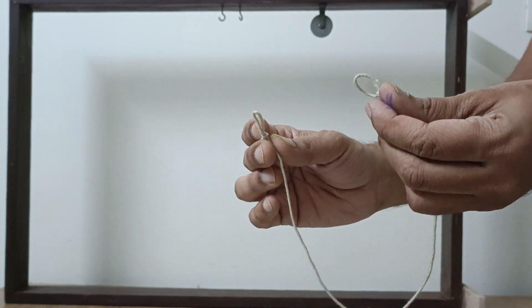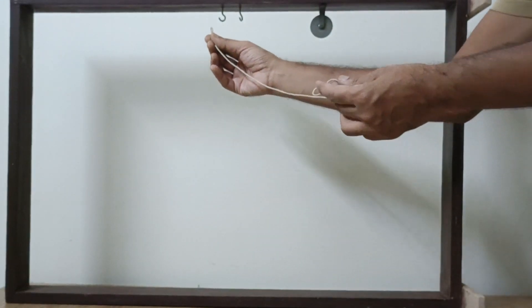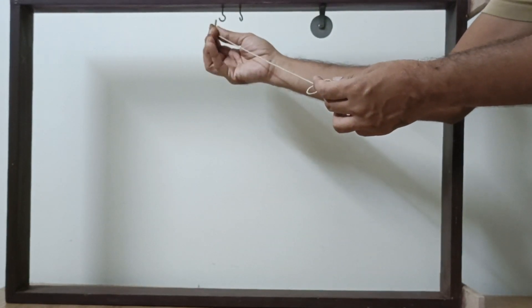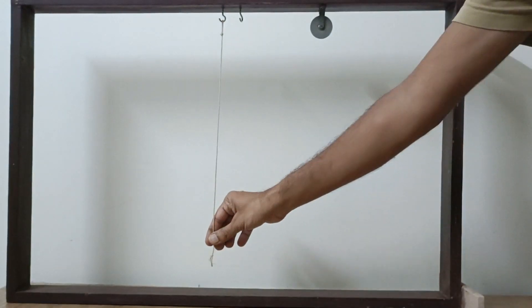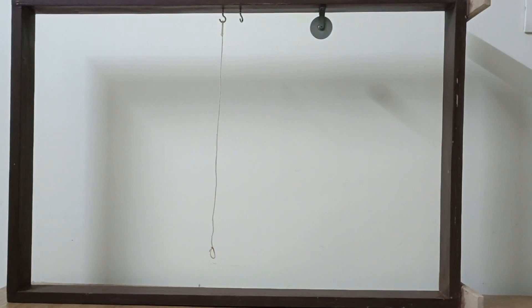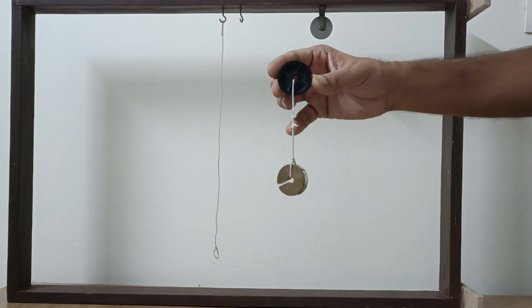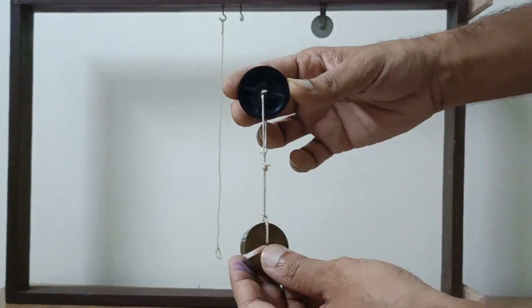Take a thin and inextensible rope having knots at both the ends. Place one of the knots in the hook. Let the rope pass over the single movable pulley attached with a 50 gram force load.